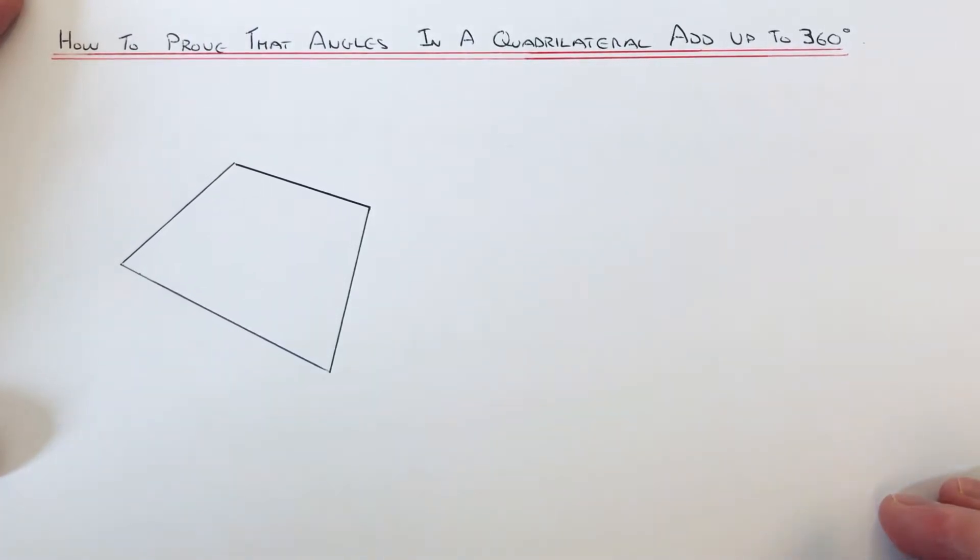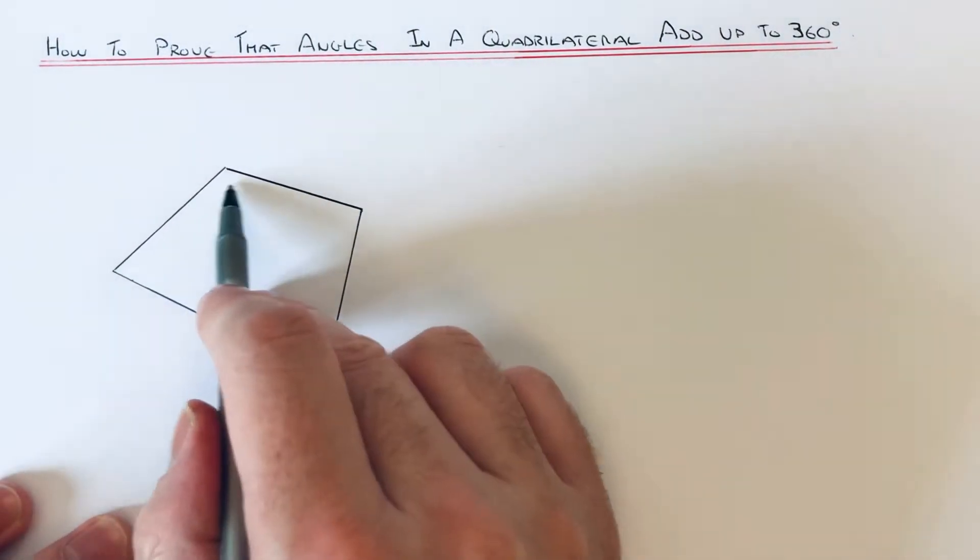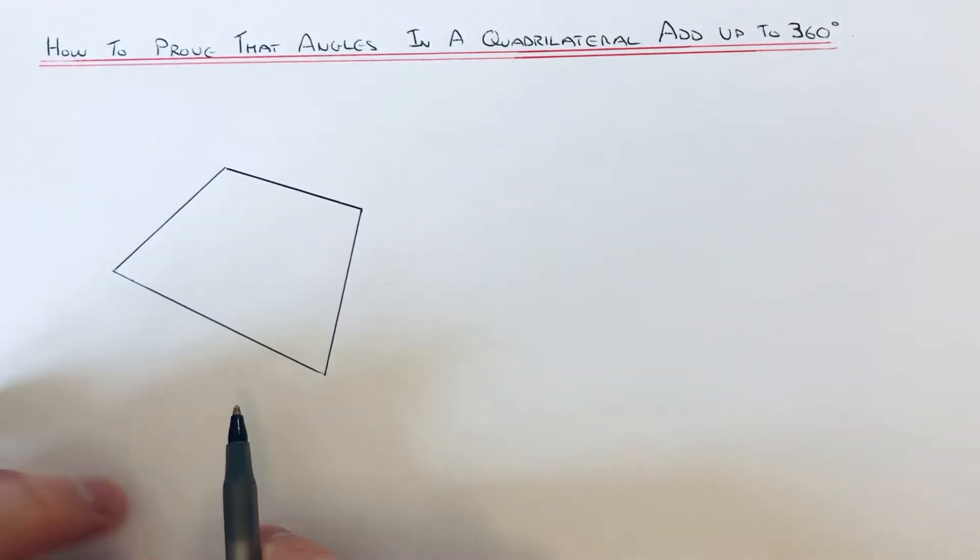Hi guys, welcome back. This is Maths 3000. Today we're going to prove that the angles in a quadrilateral add up to 360 degrees. We're going to prove that all these four angles here add up to 360 degrees.